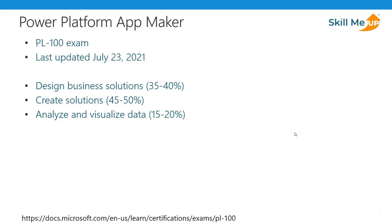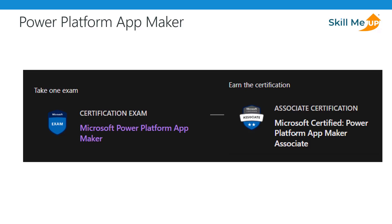The first Associate certification is the Power Platform App Maker, which is the PL-100 exam. The key skills measured include Design Business Solutions, around 35 to 40 percent of the exam questions; Create Solutions, around 45 to 50 percent; and Analyze and Visualize Data, around 15 to 20 percent. The candidate envisions and creates solutions to simplify and automate tasks and processes for themselves and their team, and understands the data, issues, and required processes involved.